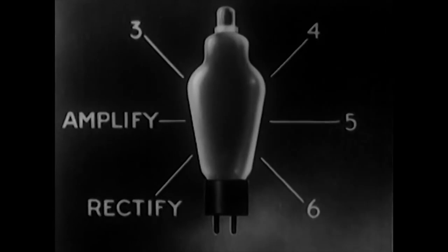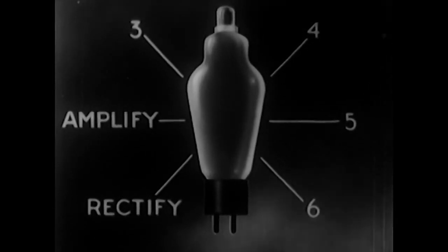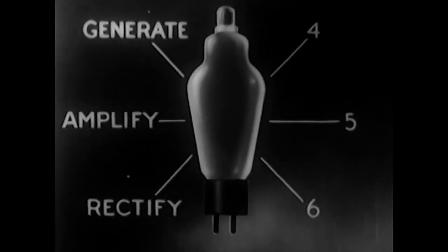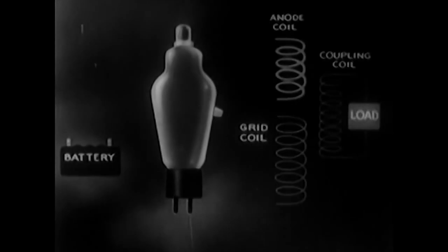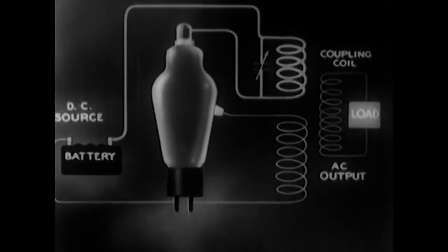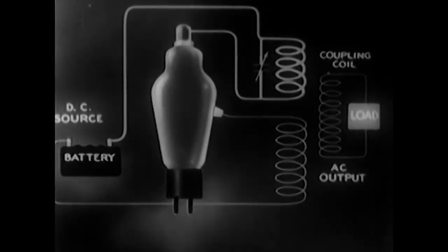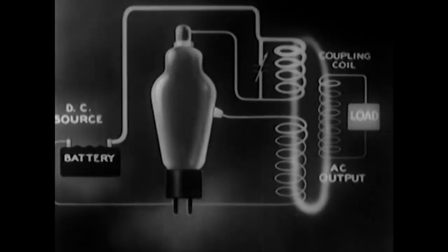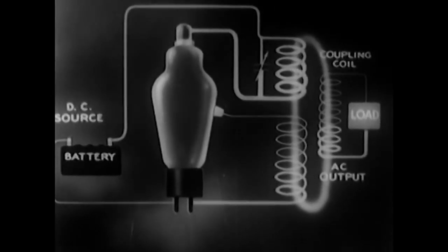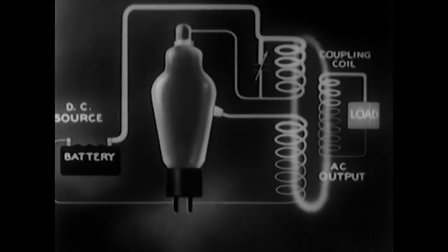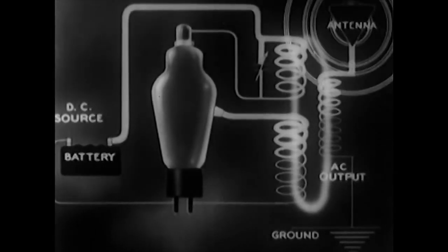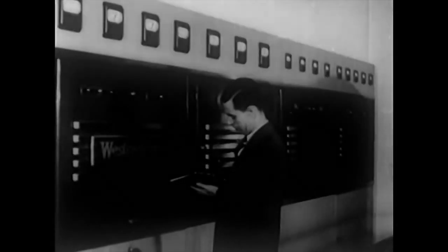We've considered two basic things the electronic tube can do: it can rectify, it can amplify. A third thing it can do is generate. A triode connected for oscillation becomes capable of changing direct current into alternating current by amplifying and feeding back part of the amplified voltage to the grid. This electronic means of generating alternating current is important because it can produce very high frequencies — up to millions of cycles — far beyond the range of ordinary rotating equipment.